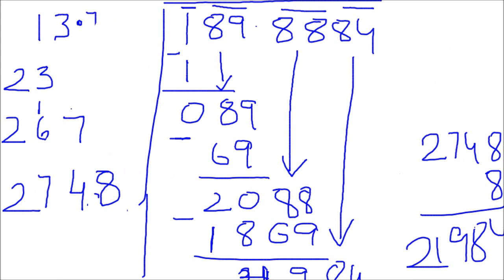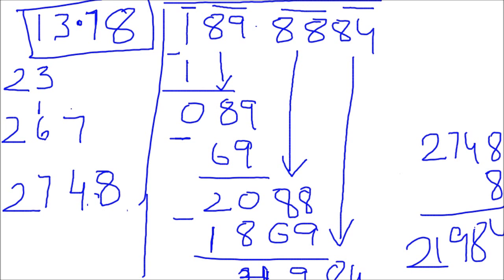The answer is 13.78, meaning 13.78 is the perfect square root of 189.8884. I hope you now understand the trick to find the square root of a decimal number. Now that you're done with this trick, you're ready to go on to the next trick — how to find the square root of non-perfect squares. I'm mentioning the link in the description below.